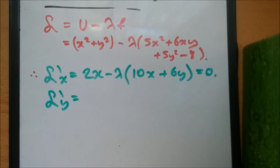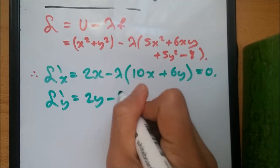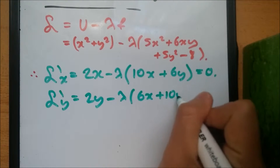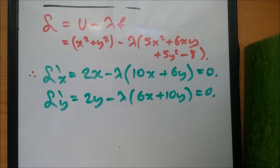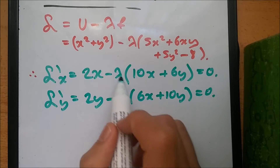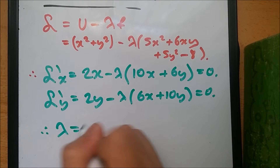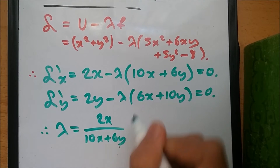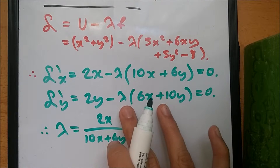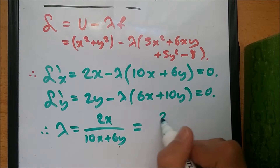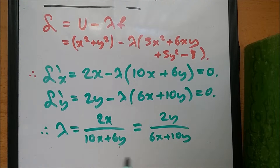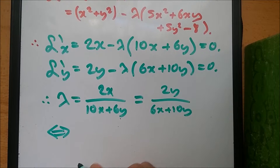Likewise, differentiating with respect to y gives 2y minus lambda times (6x plus 10y) equals 0. Now we solve for lambda in each equation. From the first: lambda equals 2x over (10x plus 6y). From the second: lambda equals 2y over (6x plus 10y). Setting these equal and cross-multiplying, we get 3x squared equals 3y squared.